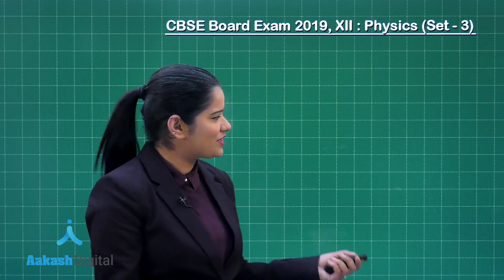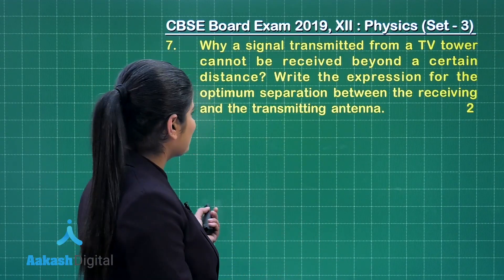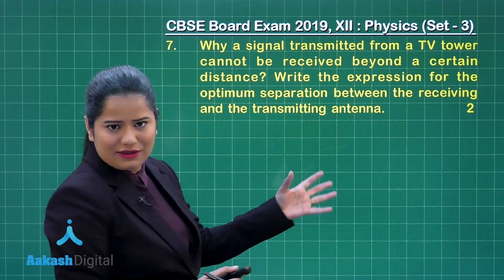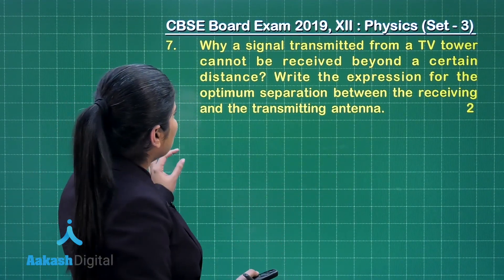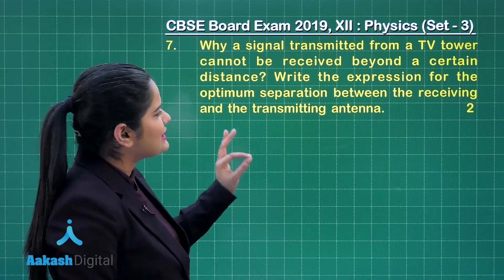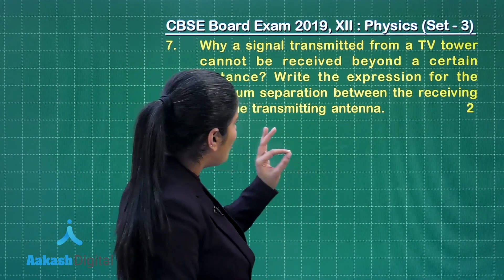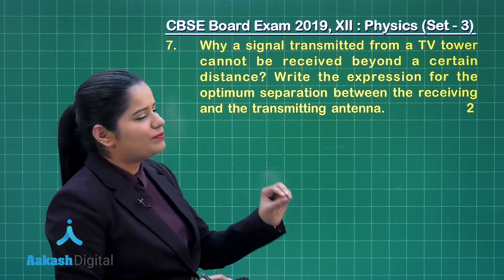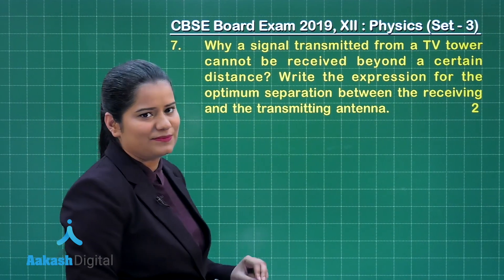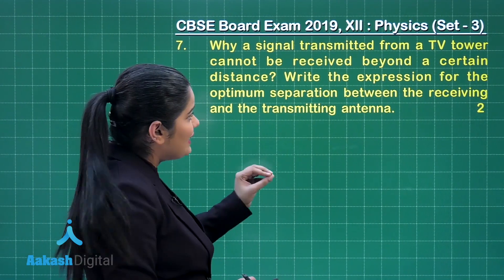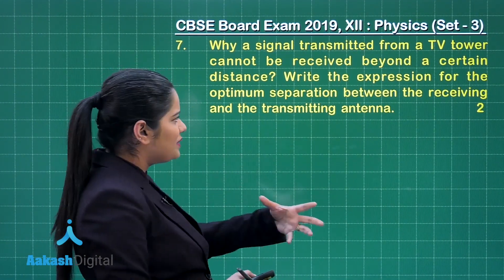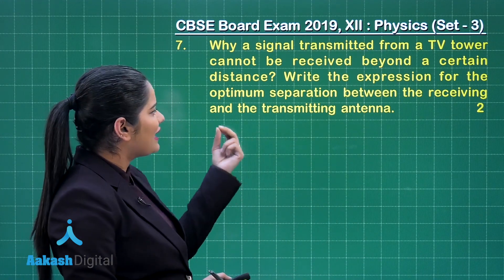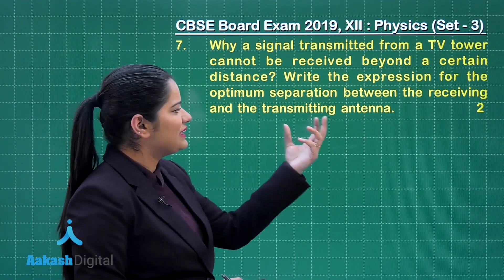It is the turn to take up the next question for our discussion, that is question number 7. This is again for two marks. The question says: why can a signal transmitted from a TV tower not be received beyond a certain distance? Write the expression for the optimum separation between the receiving and the transmitting antenna.